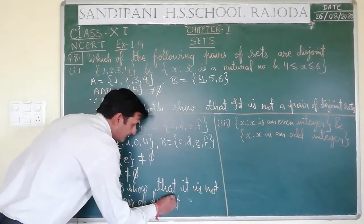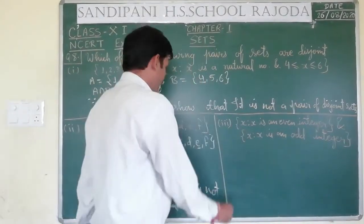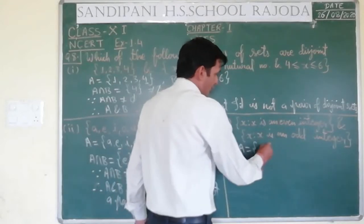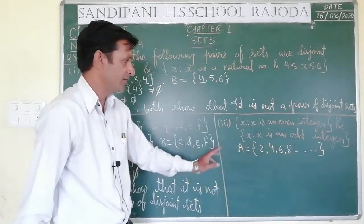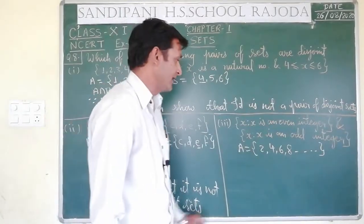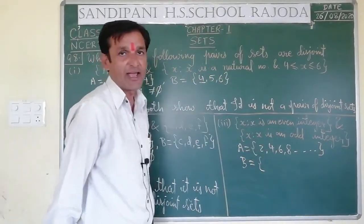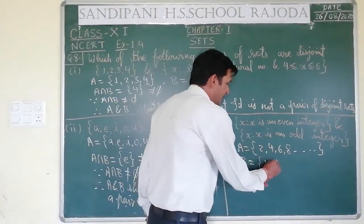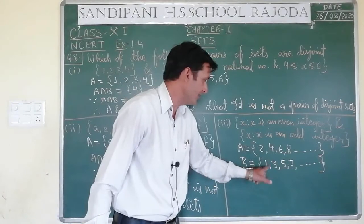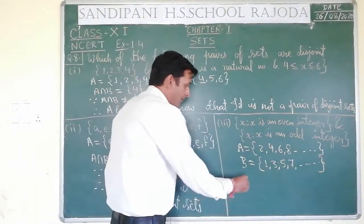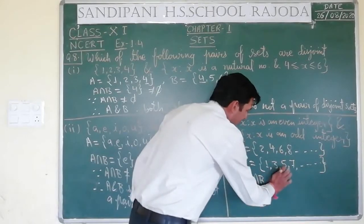Now we look at the third question: x is such that x is an even integer. So A = even integers = {2, 4, 6, 8, ...}. These are the digits that come in the table of 2 — we call them even integers. And B = {x : x is an odd integer}, so odd integers are {1, 3, 5, 7, ...}. When we look at even and odd integers, is there any common element in both? No, there is none. So here we write A intersection B = empty set — means there is no such element which is common in both.